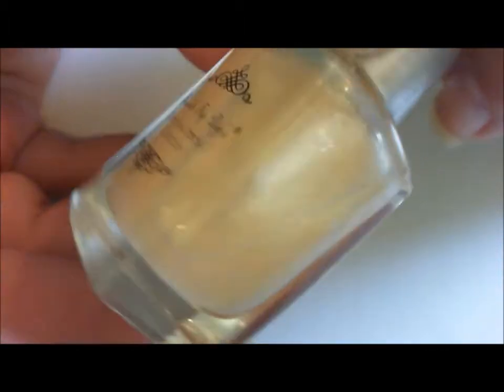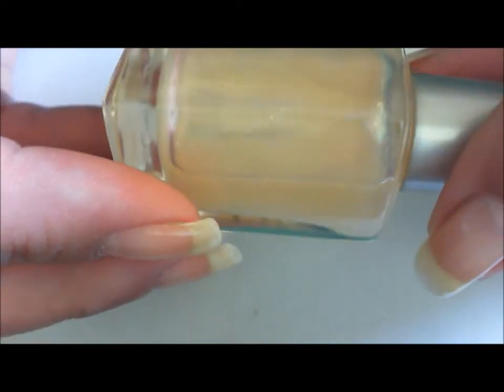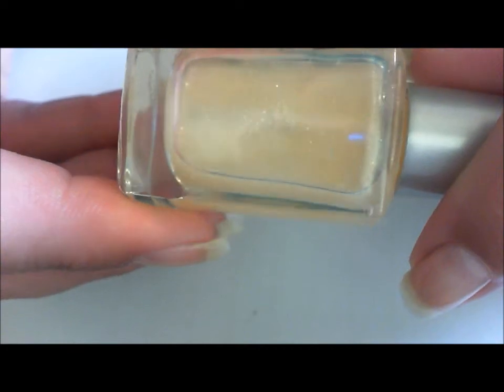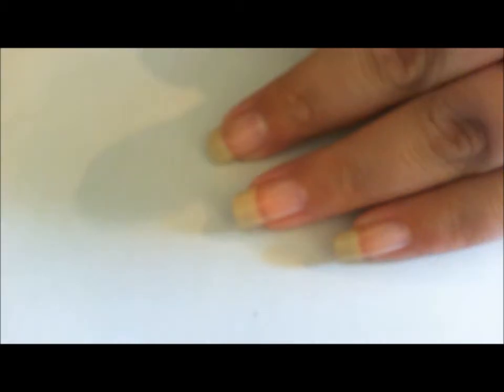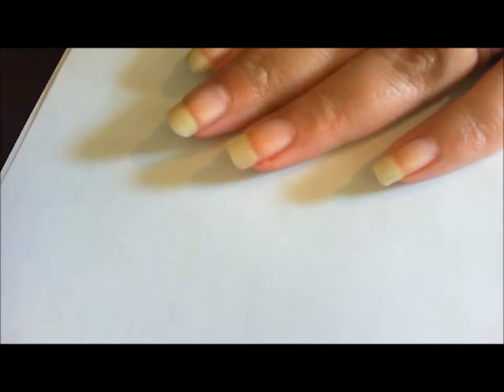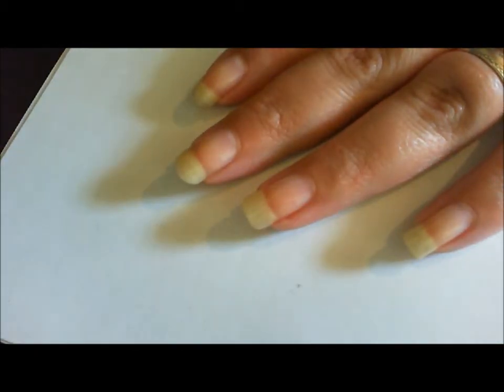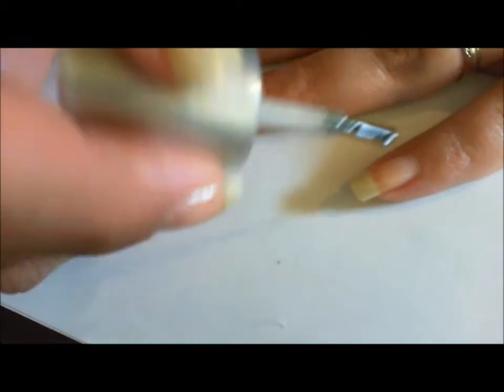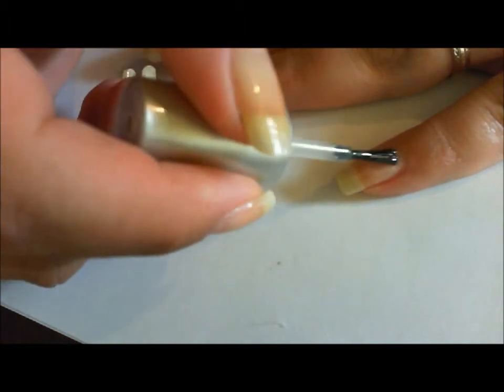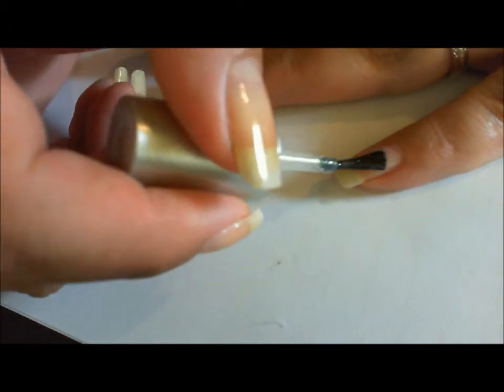It's just very sparkly. It has little opal flakes in it, but really you can use any sheer shimmery top coat you want because it doesn't matter. It's not gonna affect the overall design if you use something different. So I'm going to just apply a very thin coat and see how nice and sheer that is.